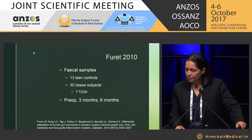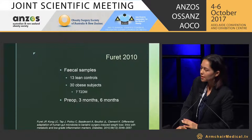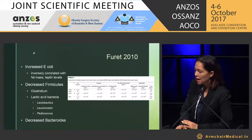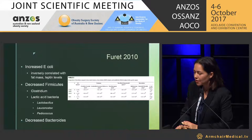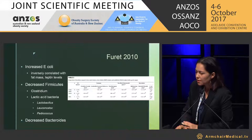Furet, in 2010, took 13 lean controls and 30 obese subjects at preoperative, three-, and six-month intervals. There was an increase in E. coli — one of our gamma-proteobacteria — and decreased firmicutes, the gram-positives. In particular, the lactic acid bacteria — again reflecting the murine and rodent studies — had decreased. I highlight this because some practitioners are using Yakult and others as an adjunct in their therapy, so perhaps we're doing the wrong thing when we give that to them. There was also a decrease in Bacteroides.